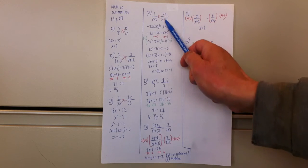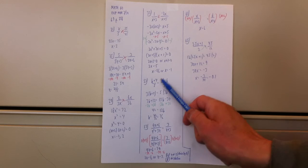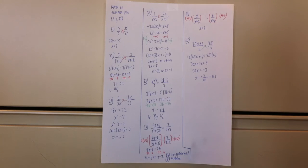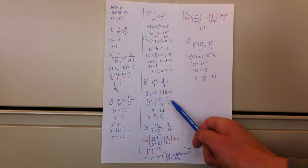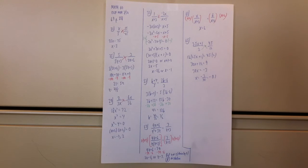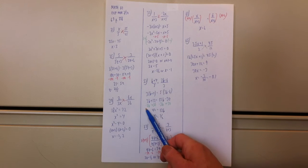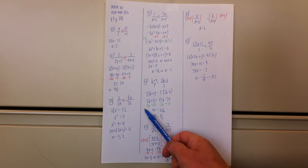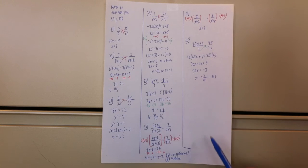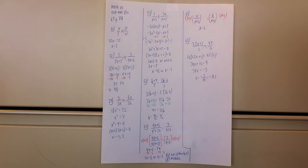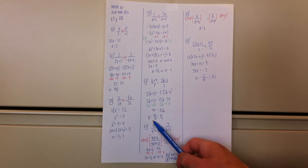Problem 53: Cross multiply — no variable in the denominator so no concern about dividing by 0. 3 times (b + 4) equals 5 times (3b − 6). Distribute: 3b + 12 = 15b − 30. Subtract 3b and add 30 to both sides: 42 = 12b. Divide both sides by 12: b = 42/12, which reduces to 7 halves.